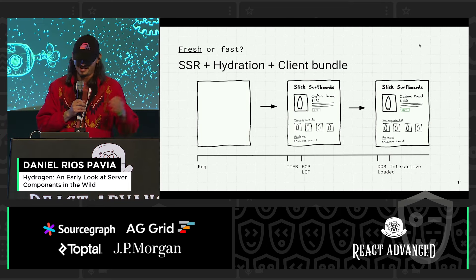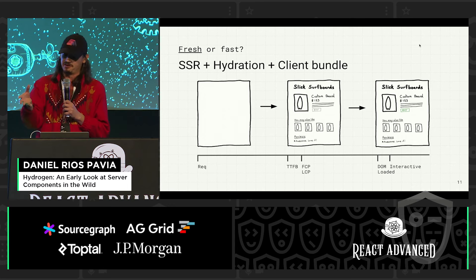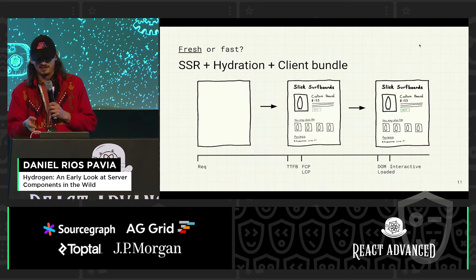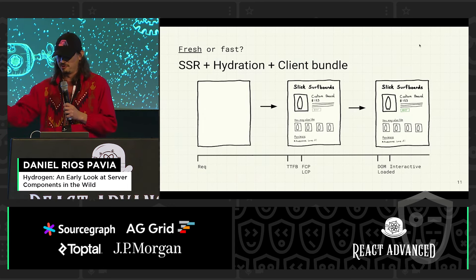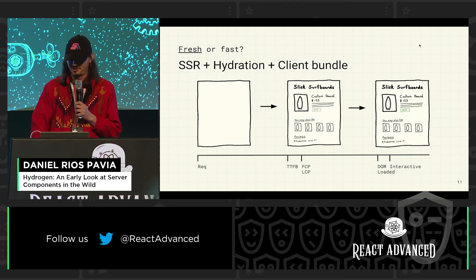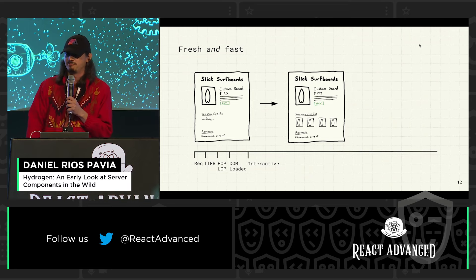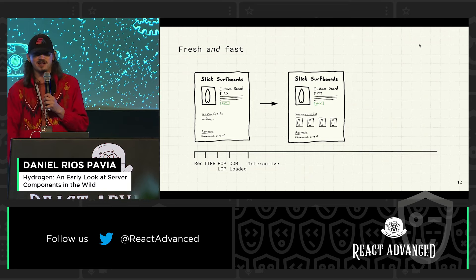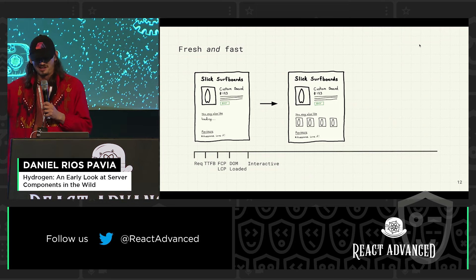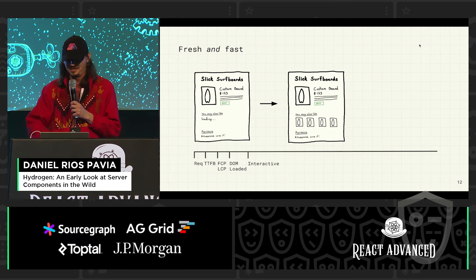What happens now is we send a server-rendered version of the site and then the client bundle, and then we hydrate it and it becomes interactive — but it's still kind of awkward. What we would like to have, especially for commerce sites, is something more like: it opens and I can buy immediately.